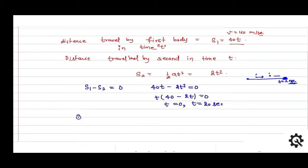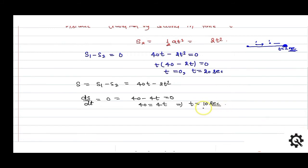S equals S1 minus S2, or 40t minus 2t squared. For S to be minimum or maximum, take the derivative and set it equal to 0. This gives 40 minus 4t equals 0, so t equals 10 seconds. Taking the double derivative, d²S/dt² equals minus 4, and d²S/dt² less than 0 means maxima.